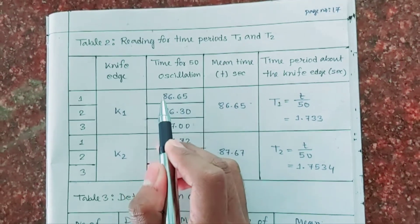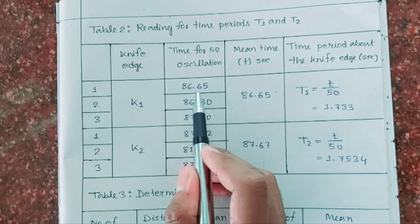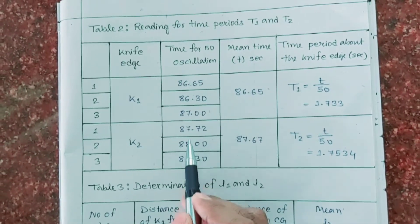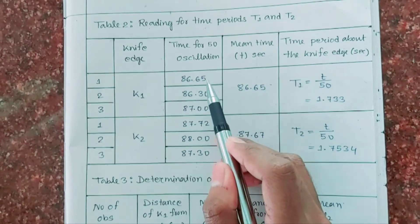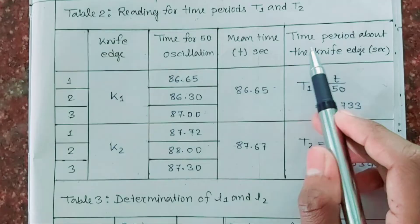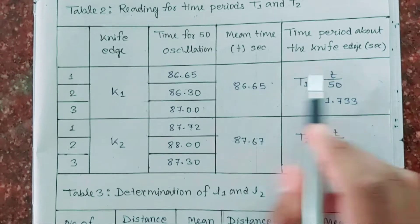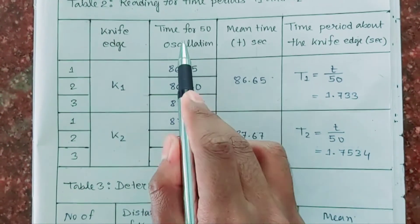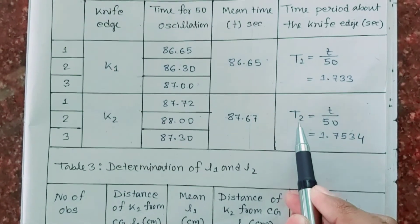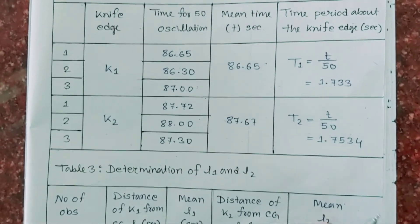We take 3 sets of 50 oscillations for knife edge K1 and record the values in seconds. Similarly, for knife edge K2, we take 3 sets of 50 oscillations and record the values. We then take the mean of these 3 values for K1 and K2. The time period T1 = mean time / 50 oscillations, and similarly T2 = mean time / 50 oscillations for knife edge K2.